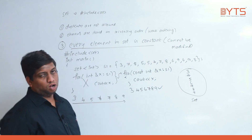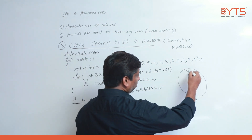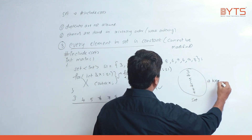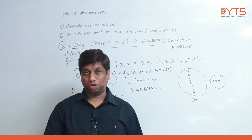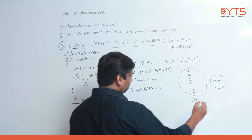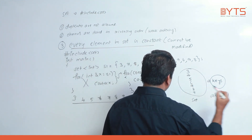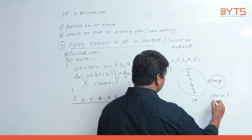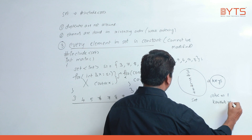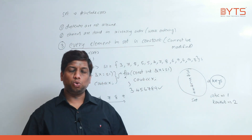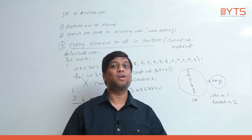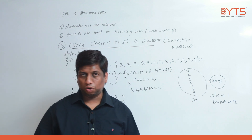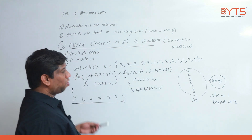Every element in the set is a constant value — that is why we generally use set to represent keys. Keys are non-duplicate values, constant values, and unique values. For example, if there is an employee ABC, employee ID is always one; if there is employee Karthik, the ID associated is always two. So keys are non-duplicate and constant values.